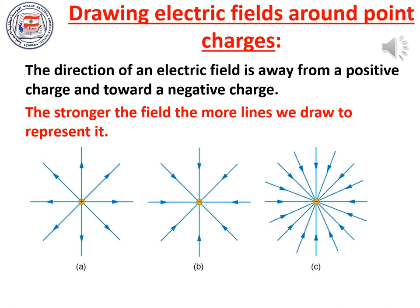Drawing electric fields around point charges. The direction of an electric field is away from a positive charge and toward a negative charge. The stronger the field, the more lines we draw to represent it. Whenever we have a positive point charge, the electric field points away from this charge, as you can see in the figure to the left. Whenever we have a negative point charge, the electric field lines point toward the negative charge. And if this charge is stronger, we will have more lines representing this field.